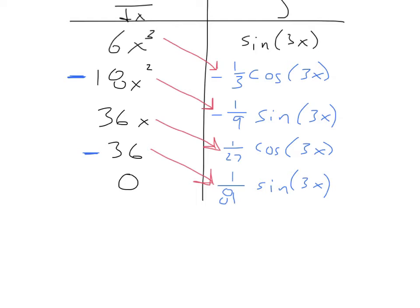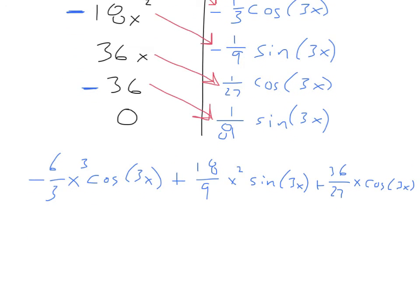What I do now is I write these things down. I'm going to write down the first one, the 6x³ times this one. So I'm going to end up with negative 6/3 x³ cosine 3x. Then positive 18/9 x² sine 3x. Then plus 36/27 x cosine 3x.